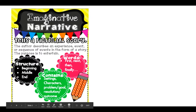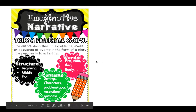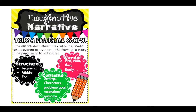Just to recap, we know that narrative writing is a fictional story that has a clear beginning, middle, and end. We have to develop the characters, the setting, and the problem. And of course we have to have some kind of resolution or solve that problem. We also need to make sure that we use time-order words like first, next, and then as we start writing our narrative drafts.